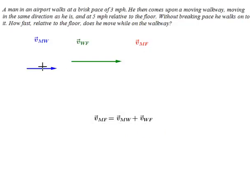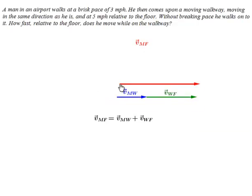So we know to add vectors. This is the velocity of the man relative to the walkway. And to this, we add the velocity of the walkway relative to the floor. And that's going to give us when we add these two, that's going to give us then the velocity of the man relative to the floor. So these two, the sum of these two is equal to this.